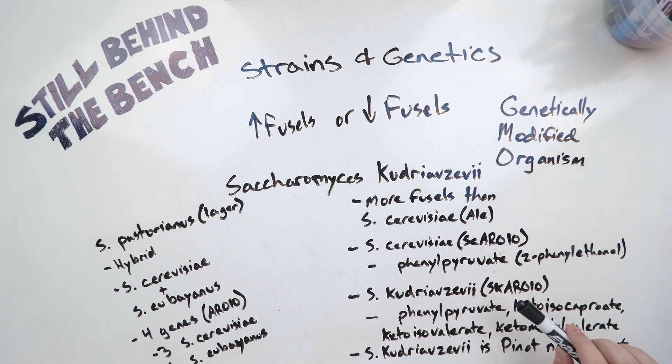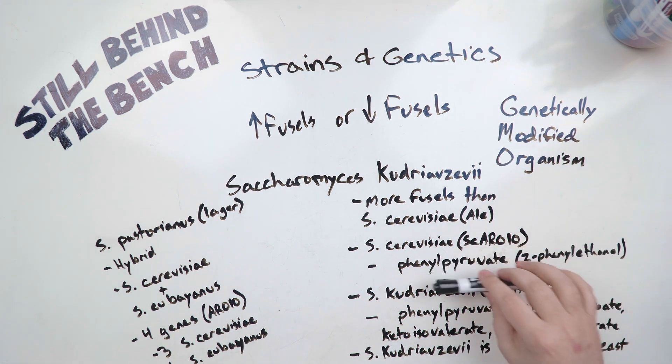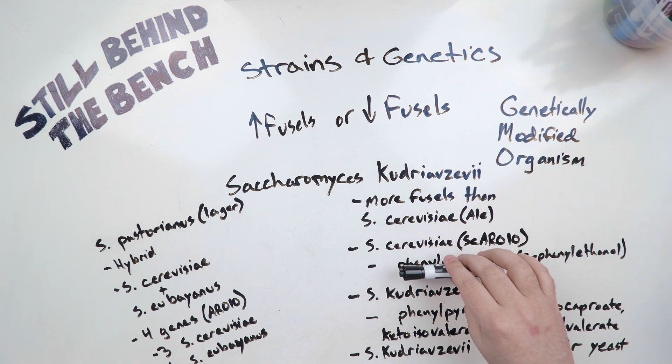Whereas Saccharomyces kudriavzevii has the same enzyme but in this yeast it doesn't preferentially bind to phenylpyruvate. It will equally bind to phenylpyruvate, keto isocaproate which makes isoamyl alcohol, the fruity banana flavor, keto isovalerate which makes isobutanol, the ethereal wine flavor, and ketomethylvalerate which is 2-methylbutanol, the ethereal flavor. It will equally bind to whichever one it comes into contact first.